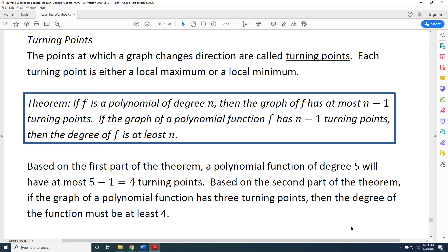Based on the second part of the theorem, if the graph of a polynomial function has 3 turning points, then the degree of the function must be at least 4. It could be degree 4 or 5 or 6 or 7 or more, but it must be at least 4.